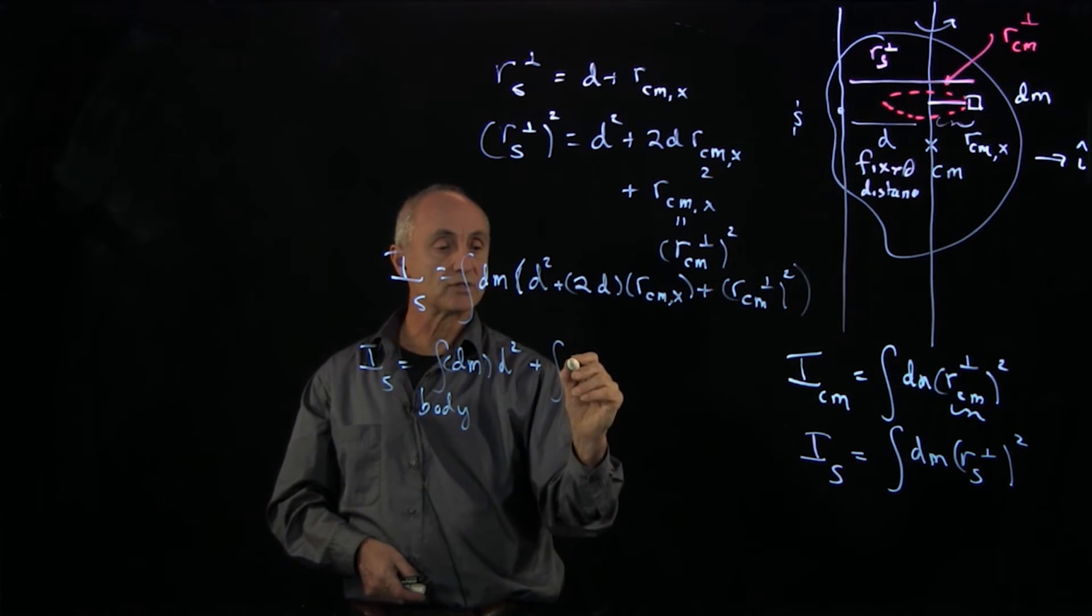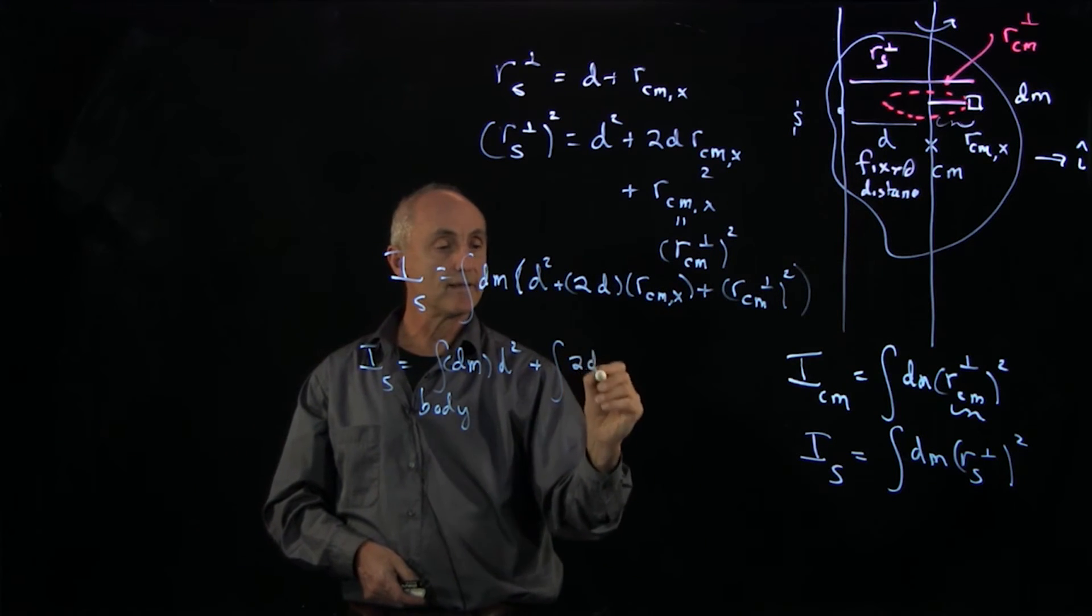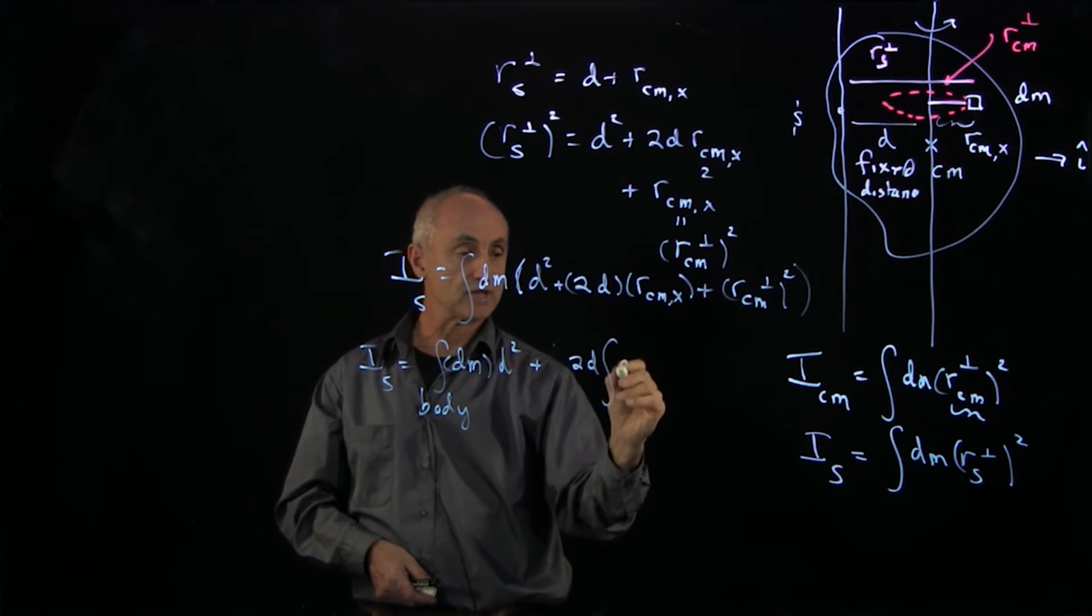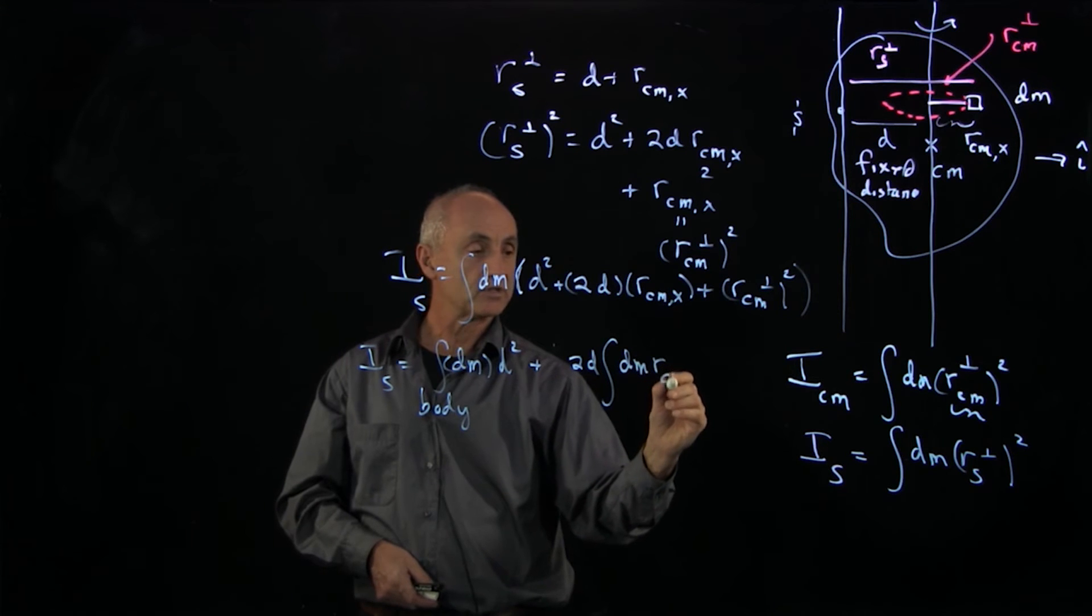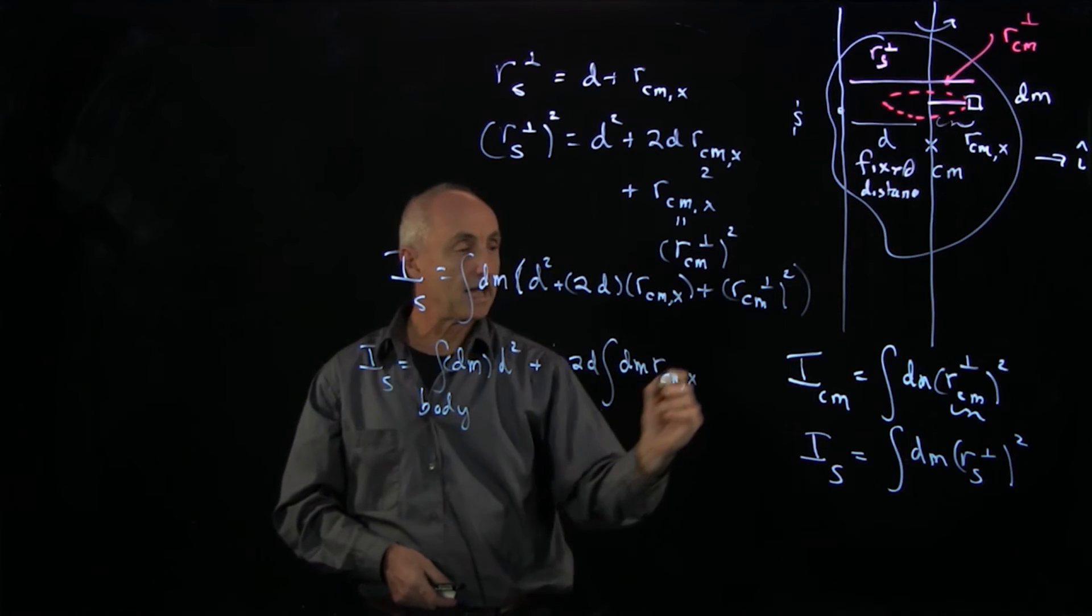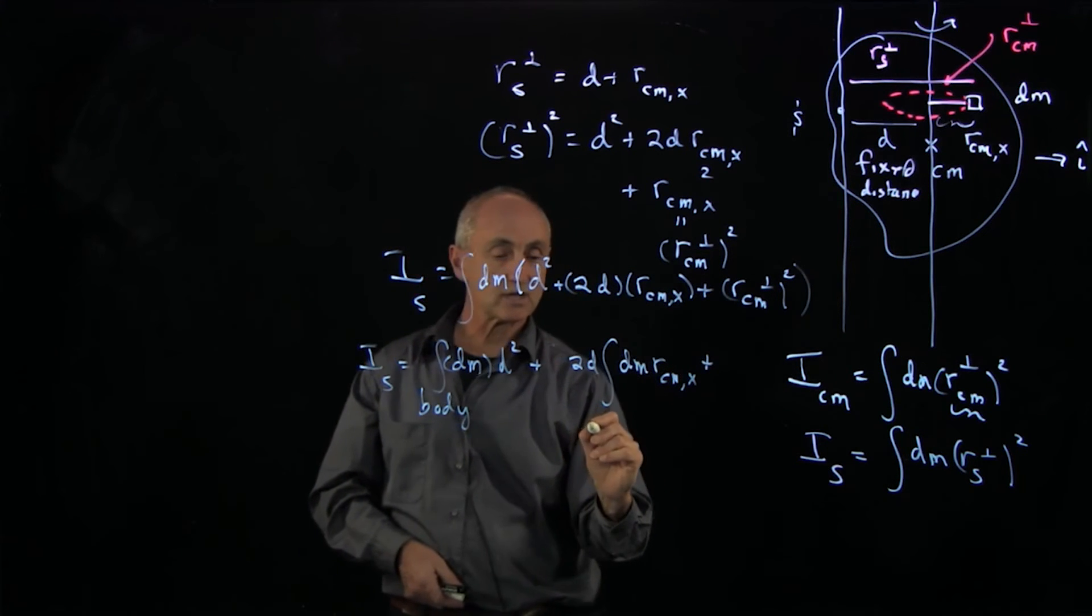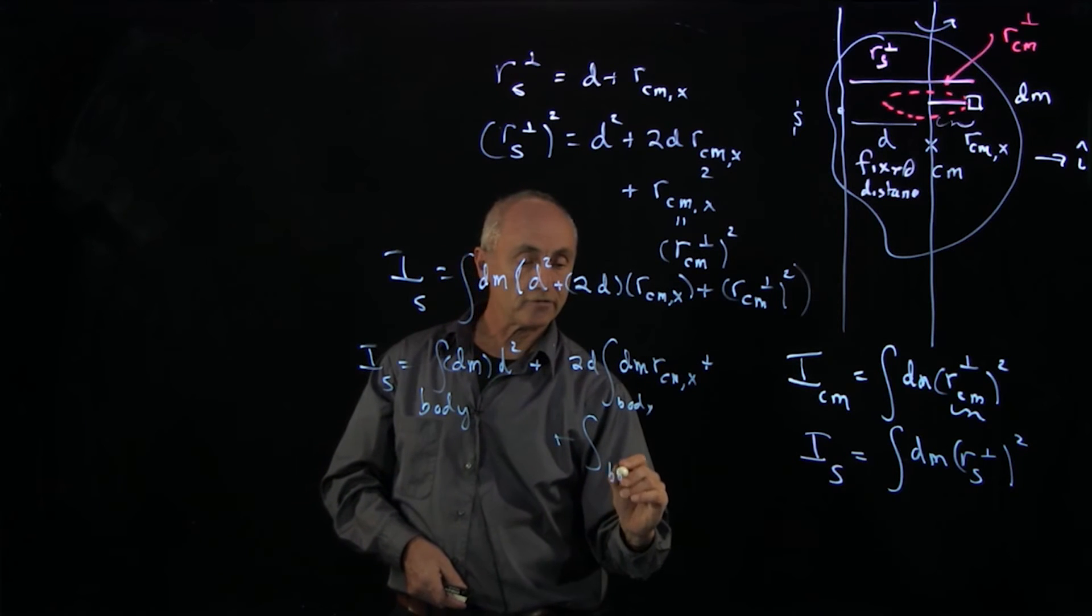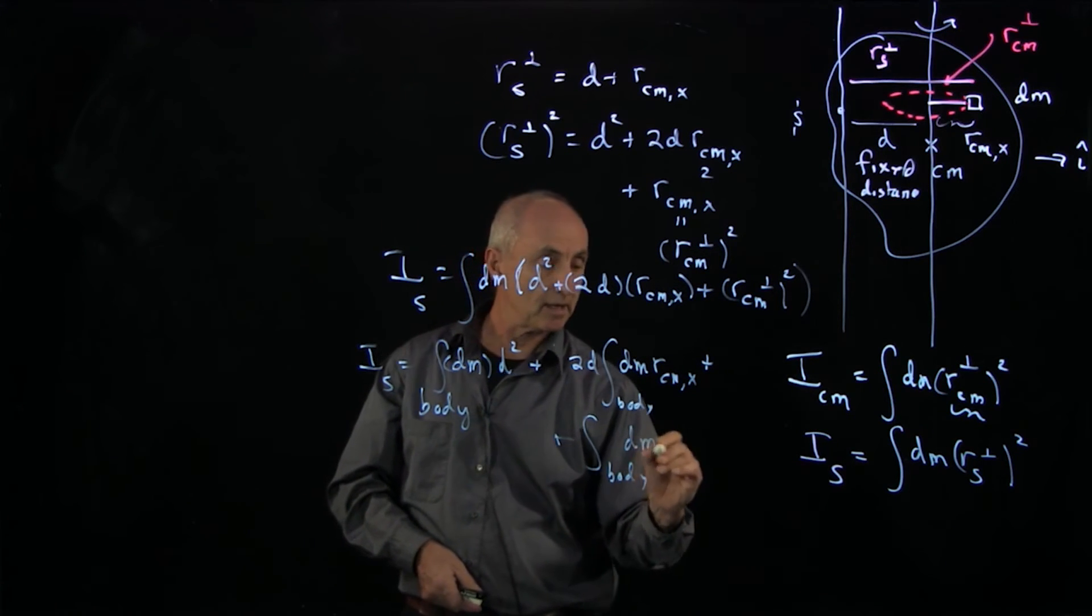The second term is 2d, and I'm going to hold off on the integral because the 2d is the same for every piece. dm r_cm_x. And the third piece is integral over the body of dm r.